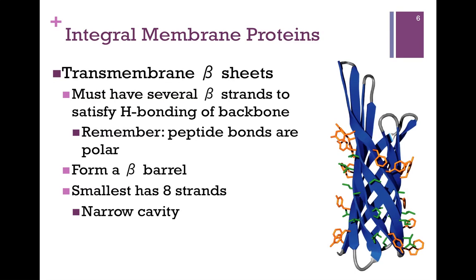The other type of integral membrane protein motif involves beta sheets. We need several beta strands in order to satisfy the hydrogen bonding of the backbone. Remember, those peptide bonds are very polar and will not interact well with the hydrophobic environment of the lipids. We can neutralize the polarity of those bonds by forming hydrogen bonding contacts, and in order to do that, we must have several strands forming a cylindrical or barrel-shaped structure.